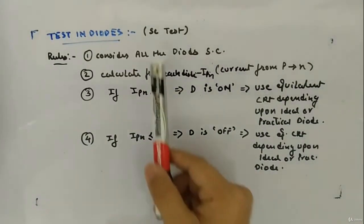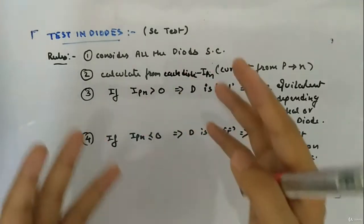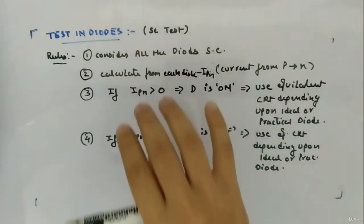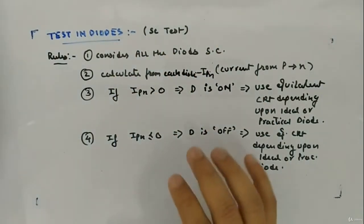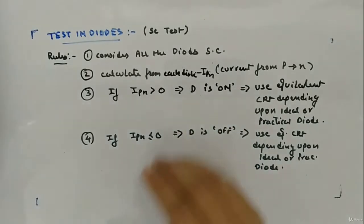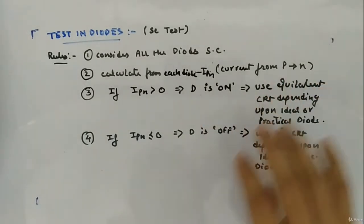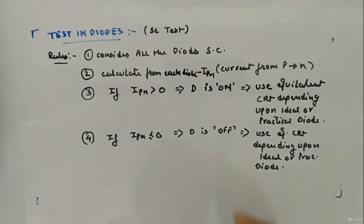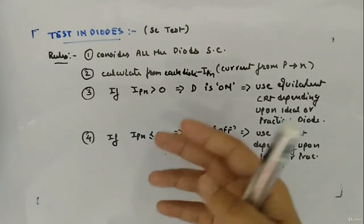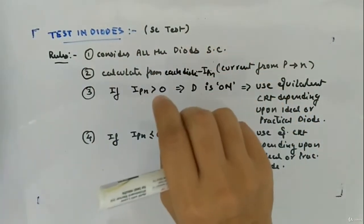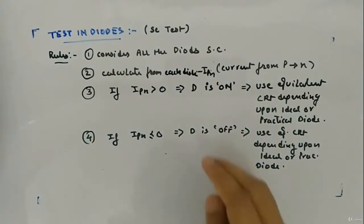Let's look at the short circuit test — the tests for diodes — to check whether the diode is in an on or off state. This will help in solving circuits consisting of diodes. We will check whether the diode is on or off, convert it into an equivalent circuit, and then solve the circuit. There are two tests: open circuit test and short circuit test. We'll look at the short circuit test first.